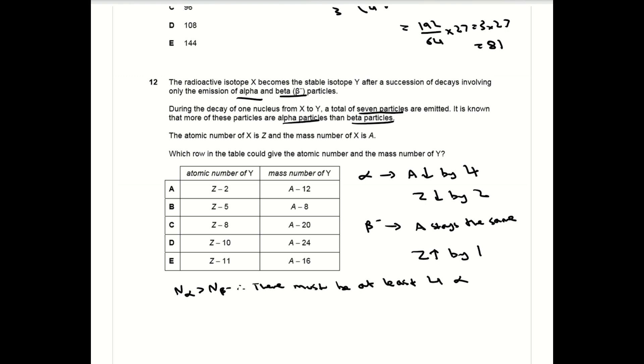So the atomic number must decrease by at least 16, which rules out A and B. From then on it's pretty much trial and error. You'd try the values for C, D, and E, and in this case it works with C, so the answer is C.